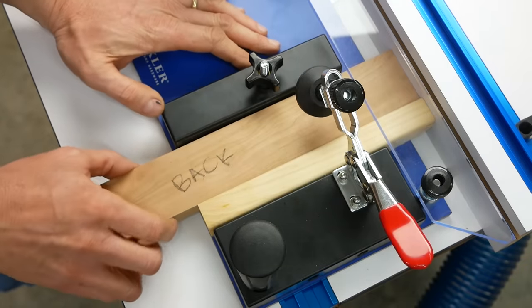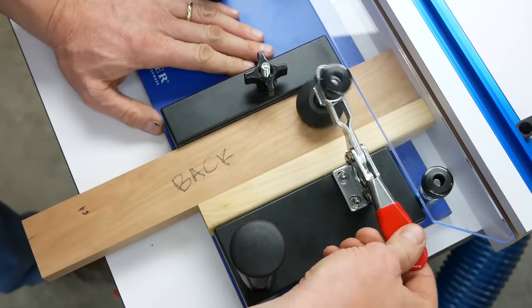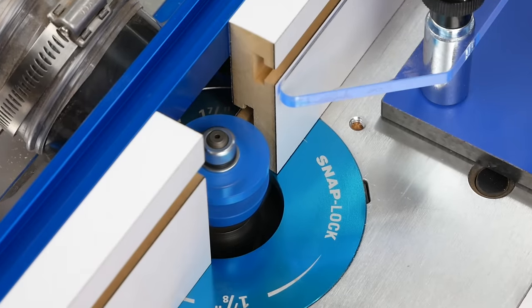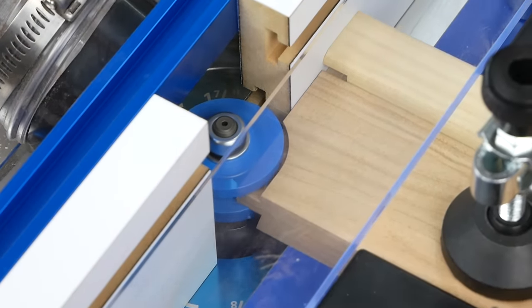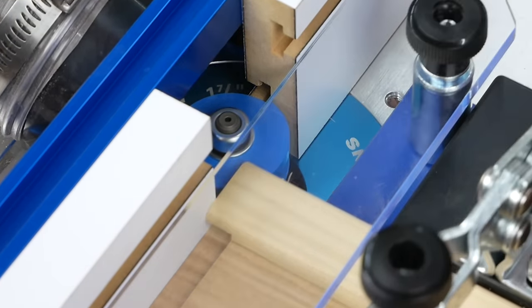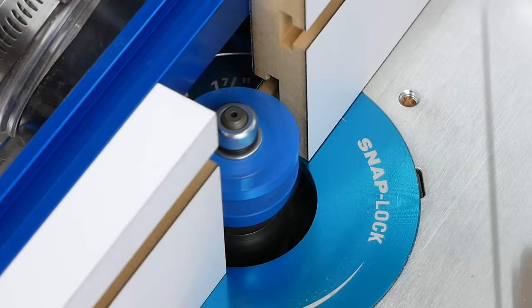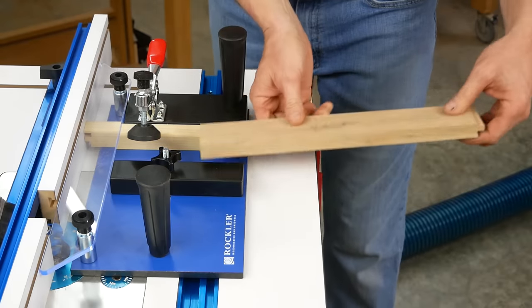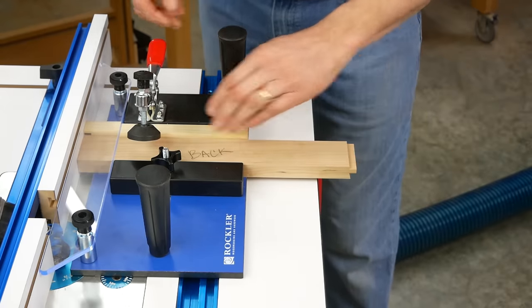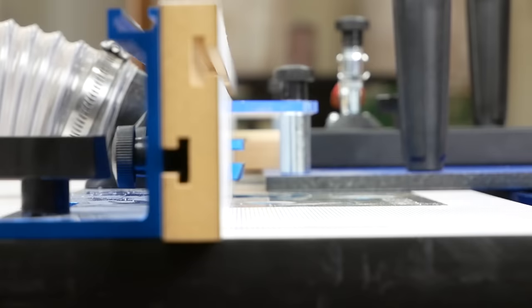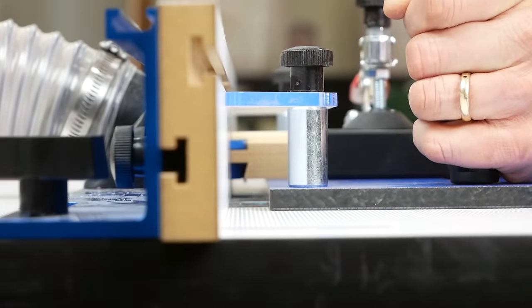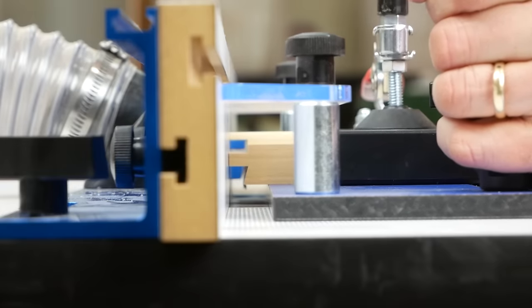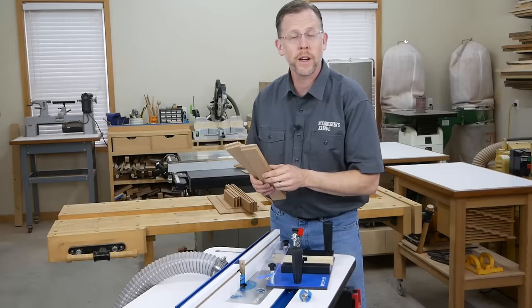Clamp your actual rail into the sled face down and repeat the process. Cope one end of the rail, then turn it end for end, re-clamp, and cope the other end. That finishes up the coping cuts on the ends of the rails.